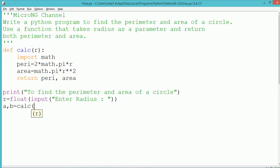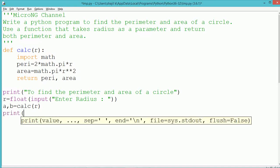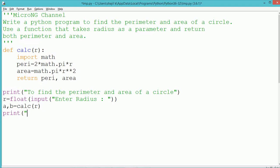To calculate the value of perimeter and area, we call the method calc. Since the calc method returns two values, which are perimeter and area, the values need to be stored in two variables, a and b.